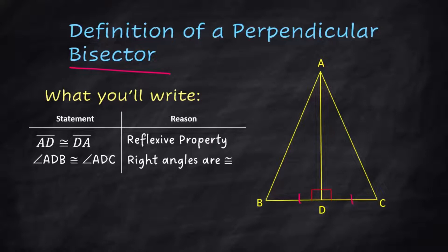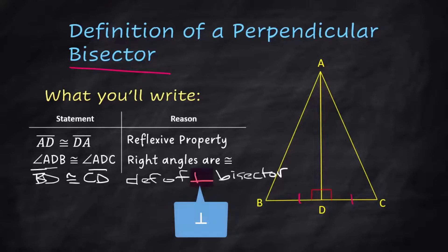This is true that AD is congruent to DA and then we got those angles congruent, but we also have BD is congruent to CD and that is the definition of a perpendicular bisector. This little symbol here, this upside down T is the symbol for perpendicular. So we have a side, this side, and then we have an angle, and then we have another side.